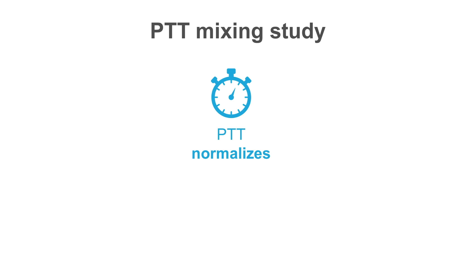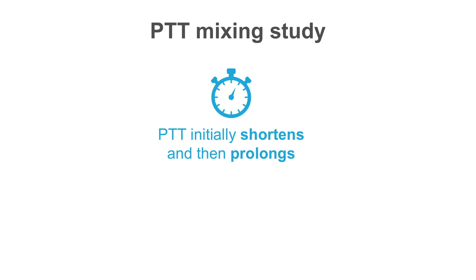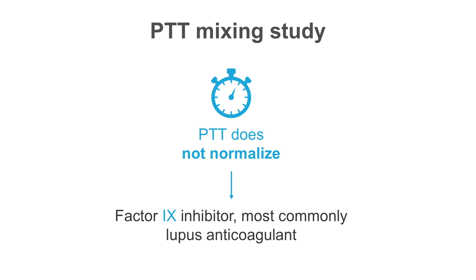If the PTT normalizes with mixing, then we are dealing with a factor deficiency and the factors involved may be factors 8, 9, 11, and 12. If the PTT initially shortens and then prolongs, then we are most likely dealing with a factor 8 inhibitor. If the PTT does not normalize, we may be dealing with a factor 9 inhibitor or more commonly a lupus anticoagulant.